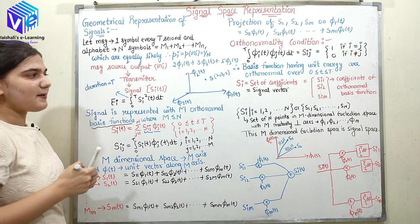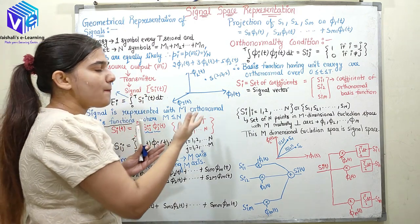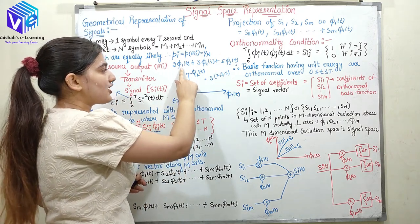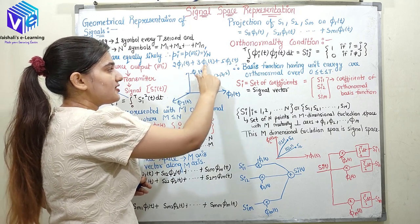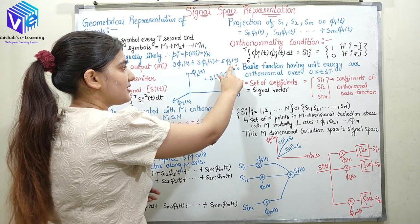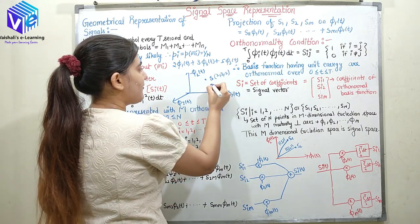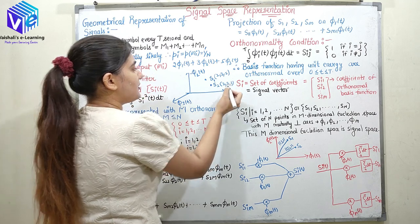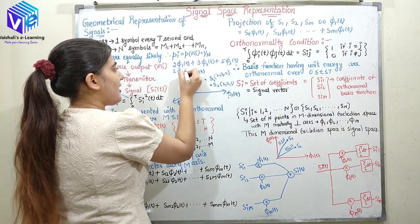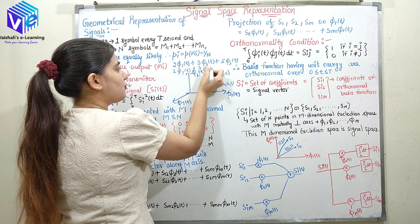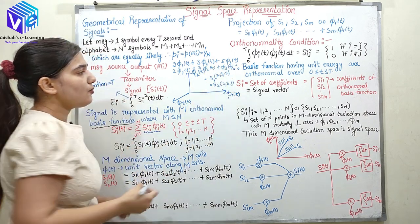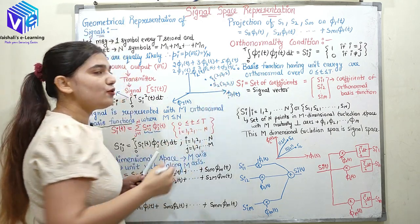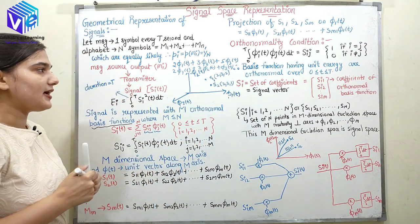These are just simple examples of linear algebra — it will get complex when I have more dimensions. Here in three dimensions: 2 is the projection on phi1(t), 3 is the projection on phi2(t), 5 is the projection on phi3(t). Similarly I can have S2 — S2 can be let's say 2, 3 and 1, so that gives 2·phi1(t) plus 3·phi2(t) plus phi3(t). What has changed? Only the projection of signal 2 on the phi3 axis has changed and nothing else.